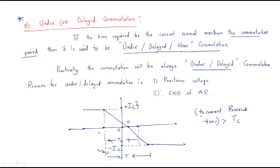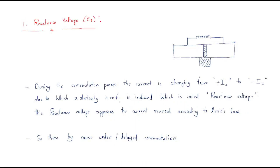The reasons for under or delayed commutation: first is the reactance voltage, and second is the cross magnetization effect of the armature reaction. Two reasons — first is the reactance voltage, second is the cross magnetization effect of the armature reaction. To understand reactance voltage we have to look at a diagram.